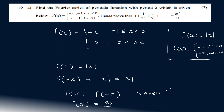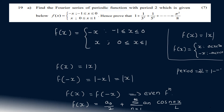Because it is an even function, f of x equals a naught by 2 plus summation n equal to 1 to infinity, aₙ into cos n pi x by L. Here L is the half-period. The period is 2, so the upper limit minus the lower limit is 1 minus minus 1 equals 2, and L equals 2 by 2 equals 1.